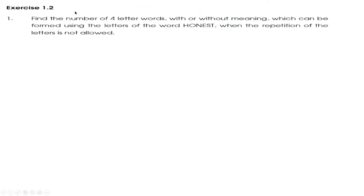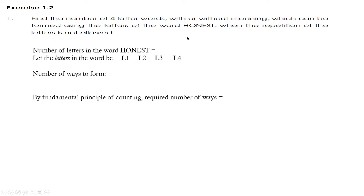Now moving on to the exercise questions from Exercise 1.2 of Chapter 6, Permutations and Combinations. First question: find the number of four-letter words with or without meaning which can be formed using the letters of the word HONEST when repetition of letters is not allowed. Here we can see that the word HONEST has 6 letters. Using these 6 letters, we need to find the number of four-letter words that can be formed without repetition.